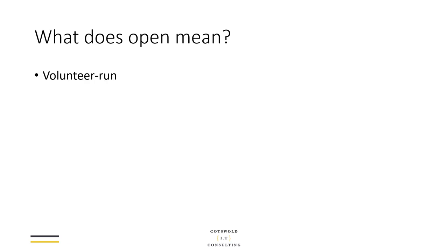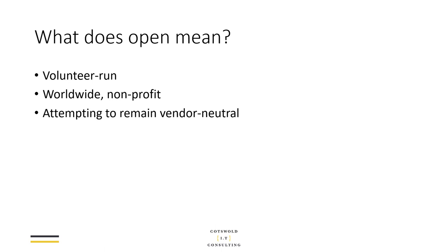But what does Open mean in this sense? Open means a number of things. It means that OWASP is primarily run by volunteers. It is a worldwide non-profit organization, so there are chapters or meetups in lots of different countries around the world. The headquarters is based in the USA, but to all intents and purposes it's not a location-dependent organization — it attempts to be global. And it tries to remain as far as possible vendor-neutral.